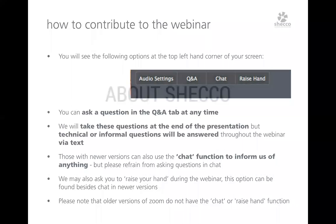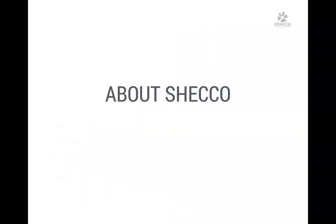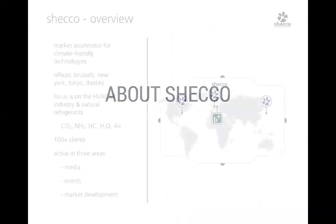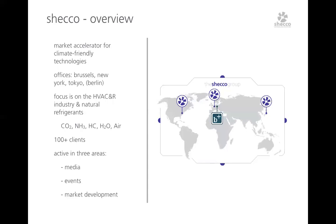Thanks, Robert. Before I get started on the content, just a few words about us. We call ourselves Market Accelerator for Climate-Friendly Technologies. Our European headquarters is in Brussels, with offices in New York, Tokyo, and an associate company in Berlin. Our focus is on the HVAC and R industry and natural refrigerants. We started 15 years ago with CO2, then expanded into ammonia, hydrocarbons, water, and air. We work with 100-plus clients around the world.